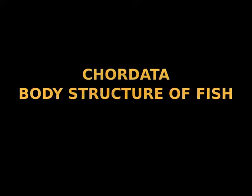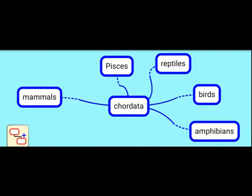Chordata body structure of fish. This is the image of a fish — we can find different parts. This is also another picture of a fish where we find different parts. This is the mind map of the Chordata.